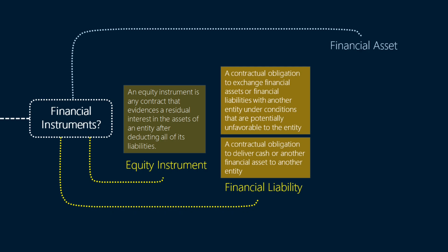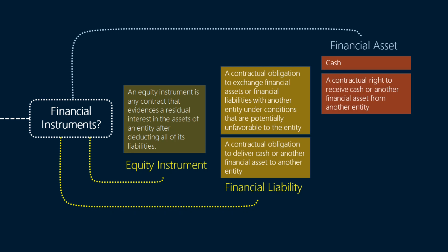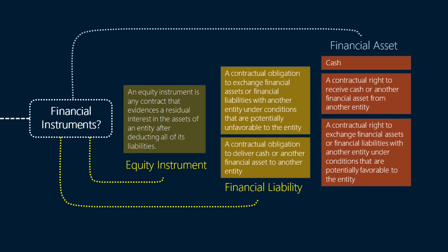A financial asset is any asset that is cash — so any currency is a financial asset — or a contractual right to receive cash or another financial asset from another entity, just like the liability counterpart which was an obligation to pay cash or other financial asset, or to exchange financial assets or financial liabilities with another entity under conditions that are potentially favorable to the entity, which means a net inflow of cash or other financial assets — just the opposite of the liability counterpart which was a net outflow.